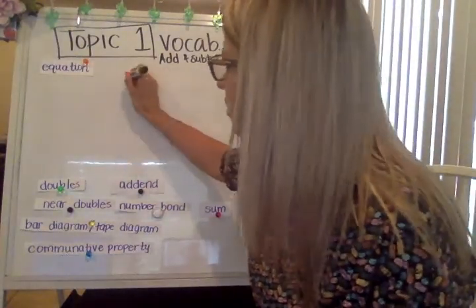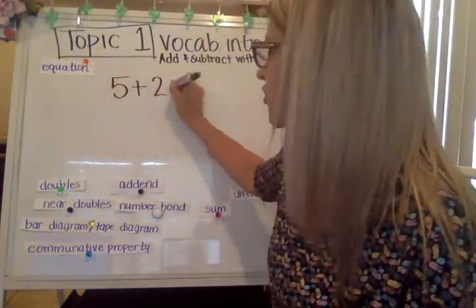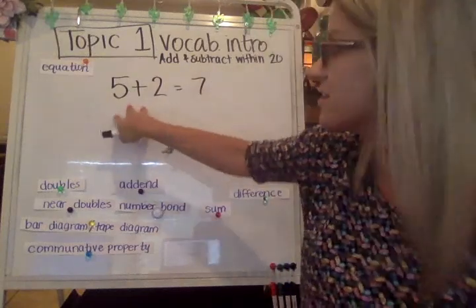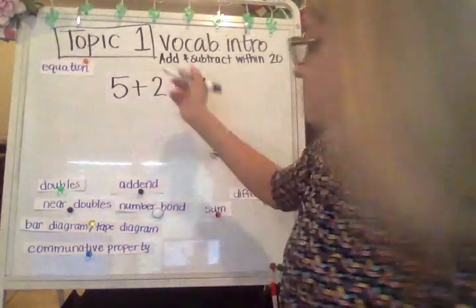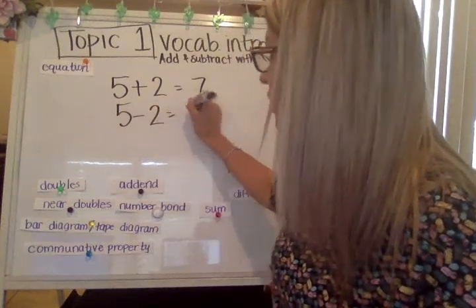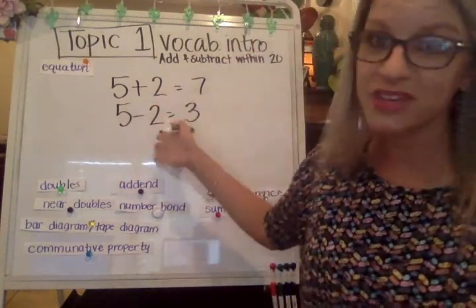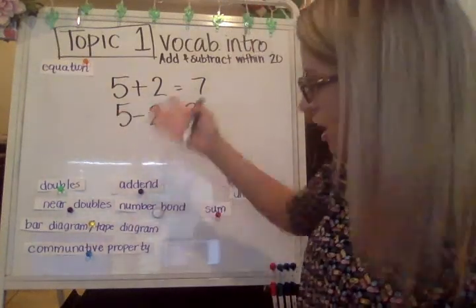An equation is the same as what you may have heard of as a number sentence. This would be an equation for addition. You could also have an equation for subtraction. Both of these would be equations.